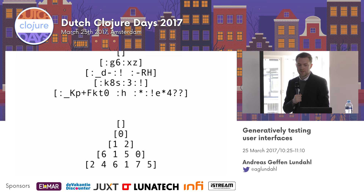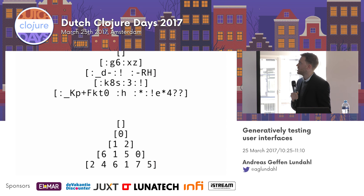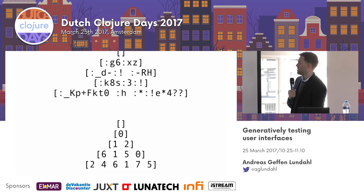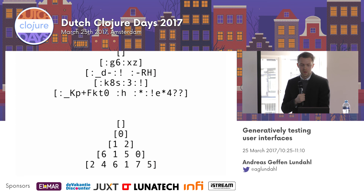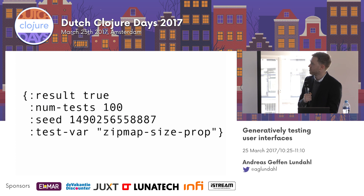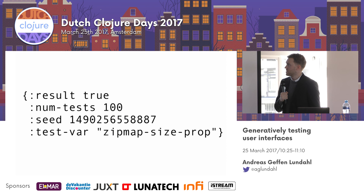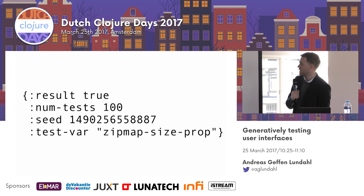Looking at some examples of generated vectors — at the top we have the keys, just random vectors with random keywords, and at the bottom we have random vectors of random natural numbers. If we actually run this test, the result looks something like this: result true. We didn't find any problems with the zip-map implementation in Clojure. We ran it a hundred times, and we have a seed — we can use that seed if we want to run exactly the same test again.